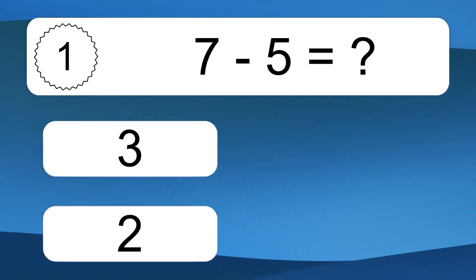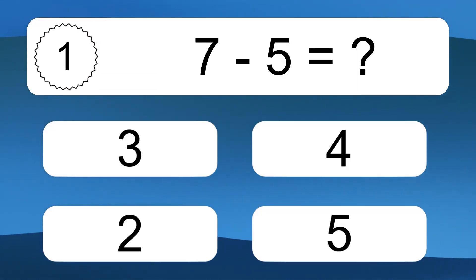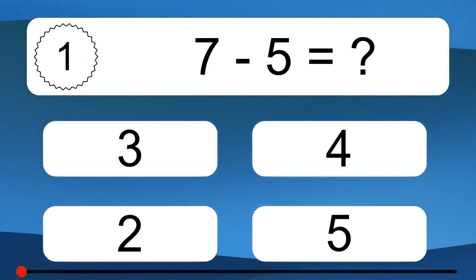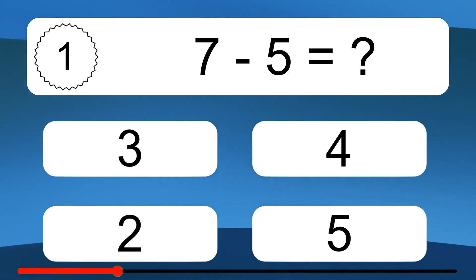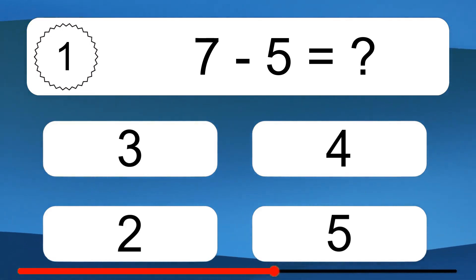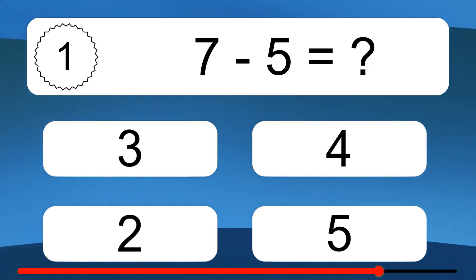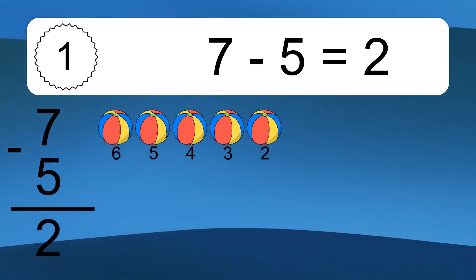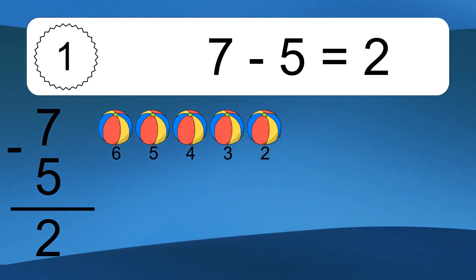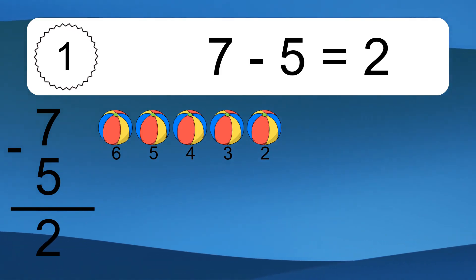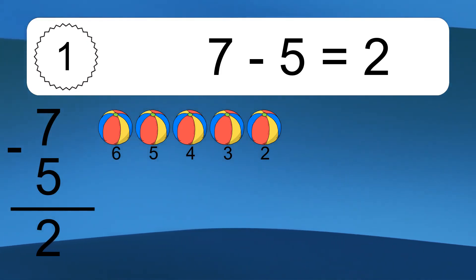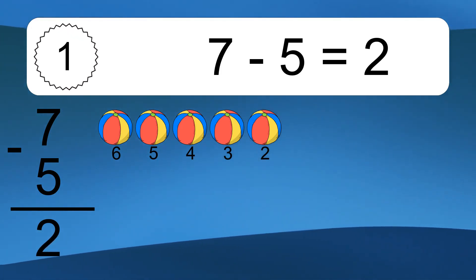7 minus 5 equals what? 7 minus 5 equals 2. Let's count it: 6, 5, 4, 3, 2.